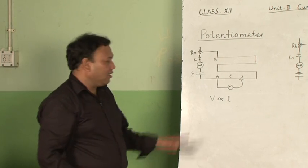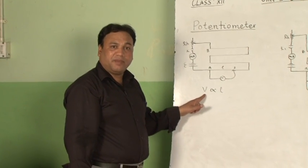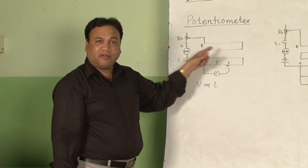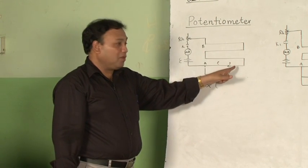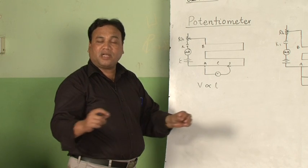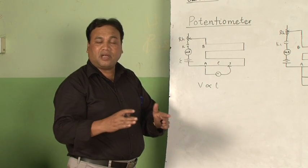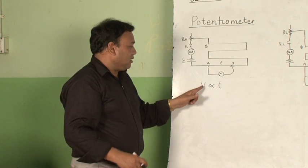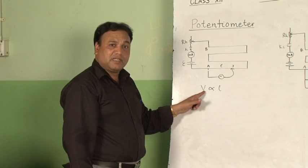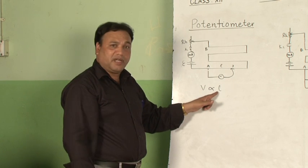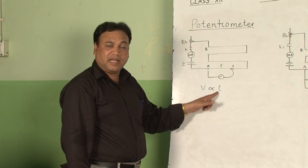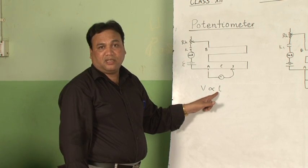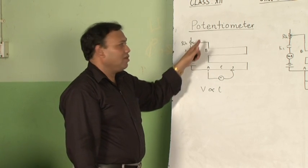The potential difference between any two points on the potentiometer wire — which must be of uniform cross section and uniform composition — is directly proportional to the length of that portion. This is called the principle of the potentiometer. The potentiometer is used to measure the potential difference between any two points in an electrical network, and its readings are more accurate than a voltmeter.